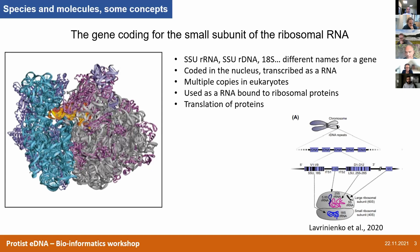First of all, what is the SSU, the 18S? These are different names for the same gene. With prokaryotes it's called 16S. This is how it looks like — this is a 3D model of the ribosome. This ribosomal gene codes for the RNA that is used to build the small subunit of the ribosomes. This RNA is actually used as such, and it's not translated into proteins.